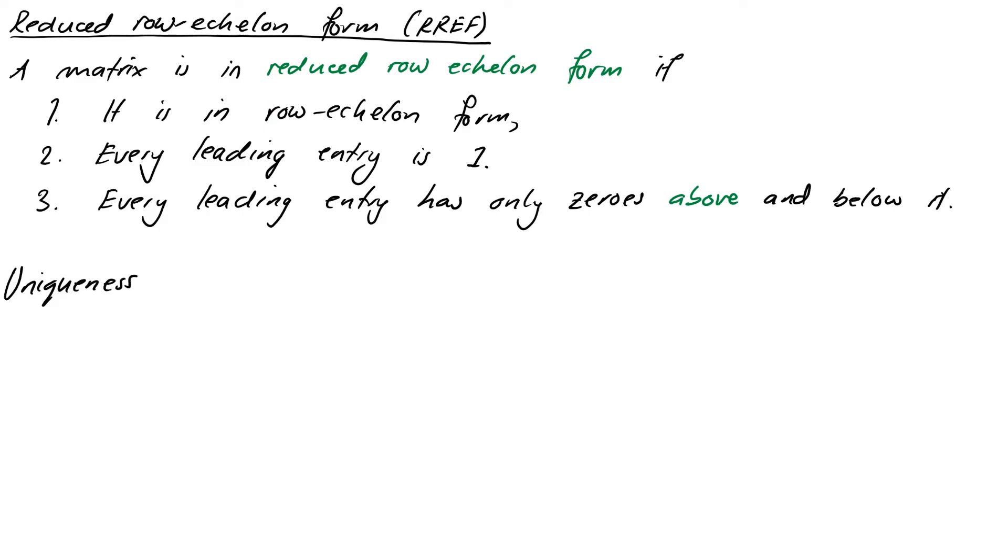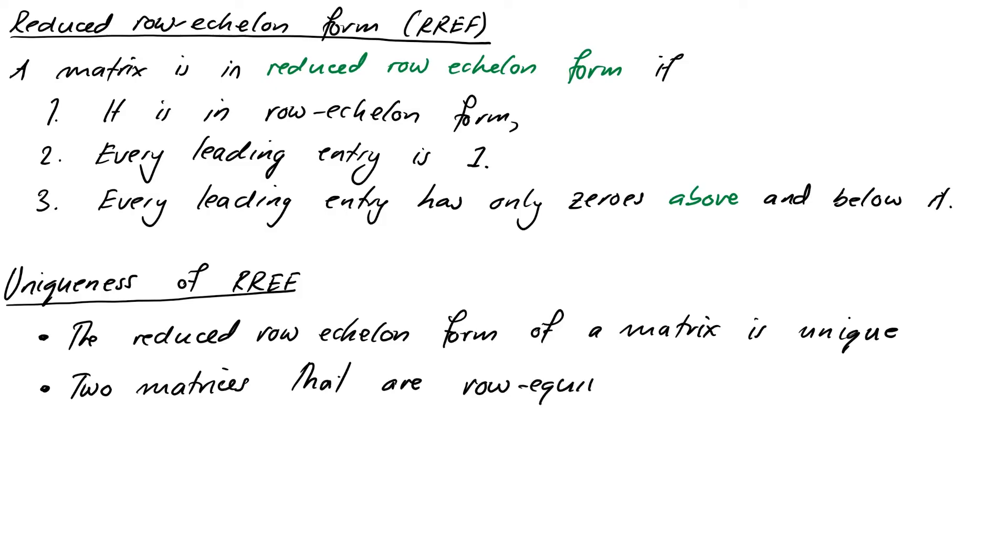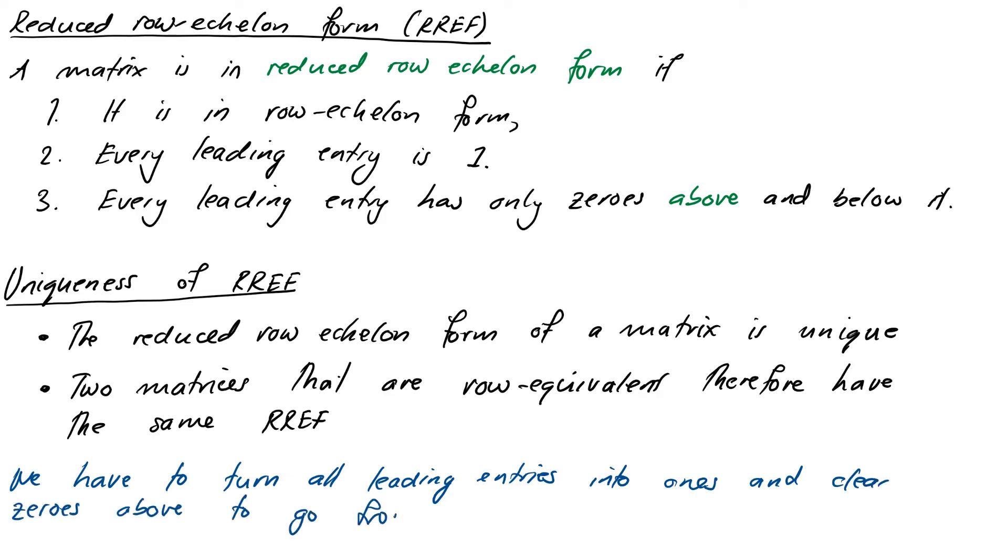So an important property of the reduced row echelon form of a matrix is its uniqueness. So the reduced row echelon form of a matrix is unique. That means no matter what sequence of row operations you do, you're always going to end up at the same reduced row echelon form. We can get different regular row echelon forms, but as far as the reduced one goes, there's only one possible for a given matrix. So that means that two matrices that are row equivalent therefore have the same reduced row echelon form. So our job is to turn all the leading entries into ones and to clear zeros above them to move to reduced row echelon form from row echelon form.